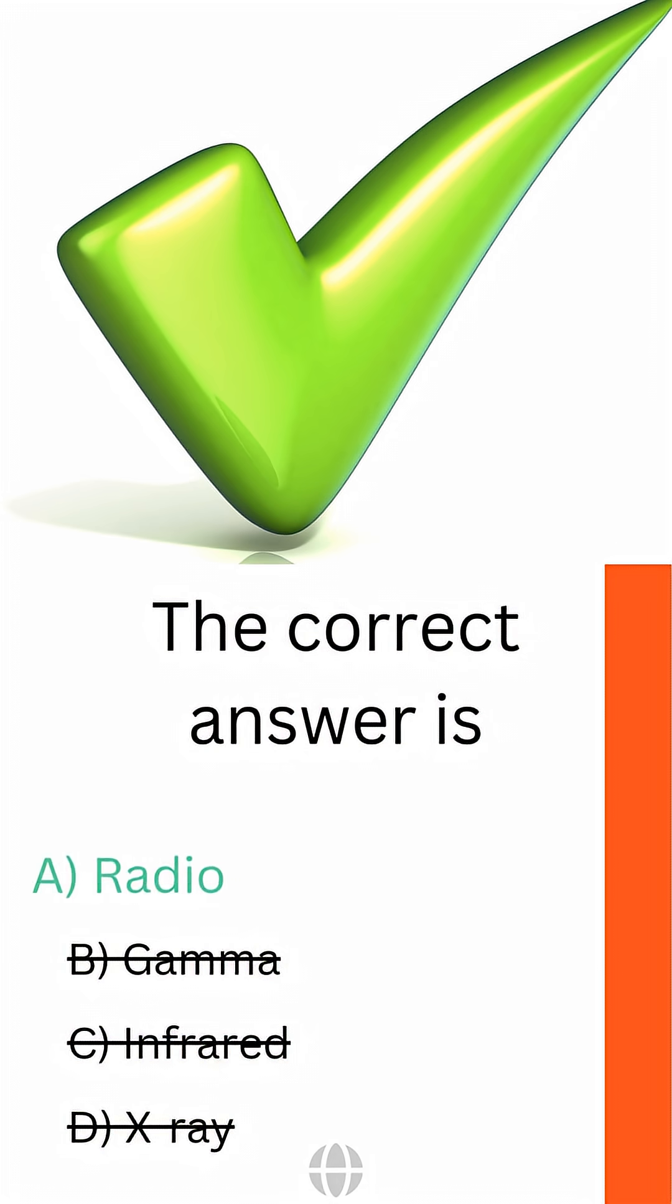The correct answer is radio waves. Microwave ovens use a specific, higher-frequency form of radio waves to excite water molecules inside your food. As the molecules vibrate faster, the food heats up from the inside out. This makes radio waves perfect for quick, efficient cooking without the dangerous energy levels of x-rays or gamma rays.